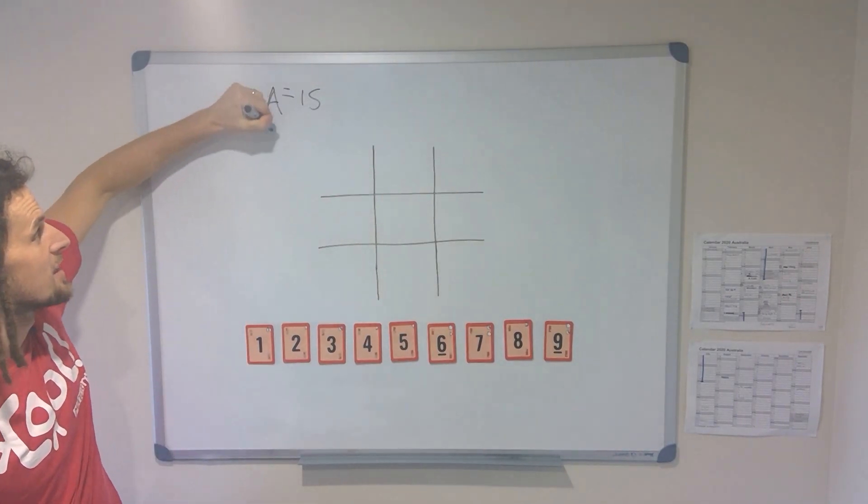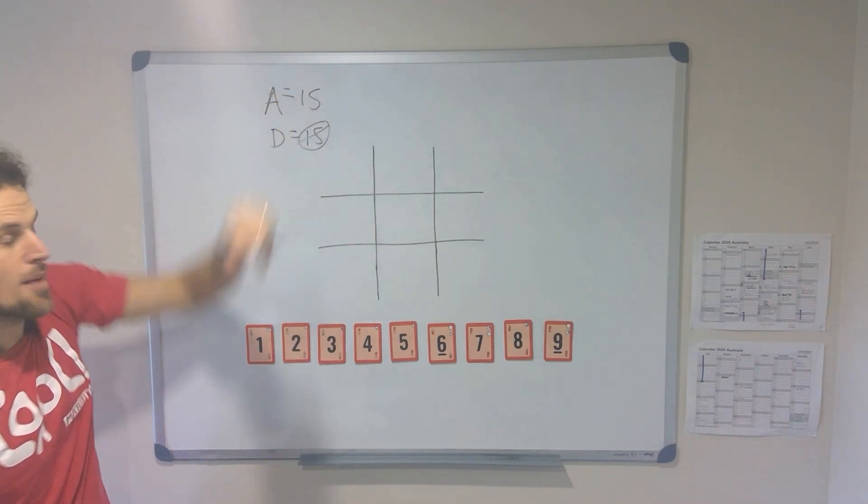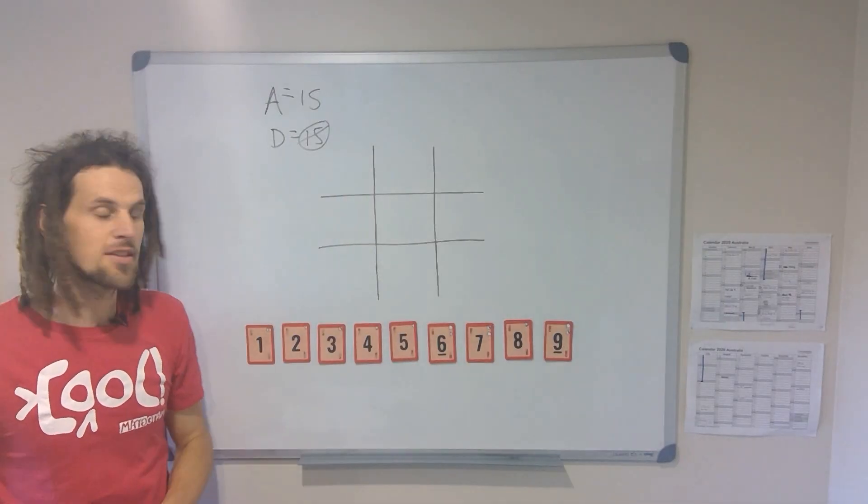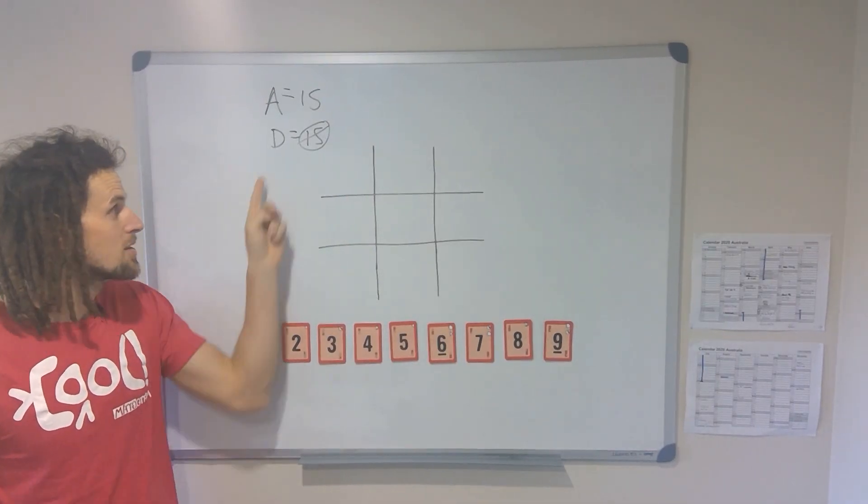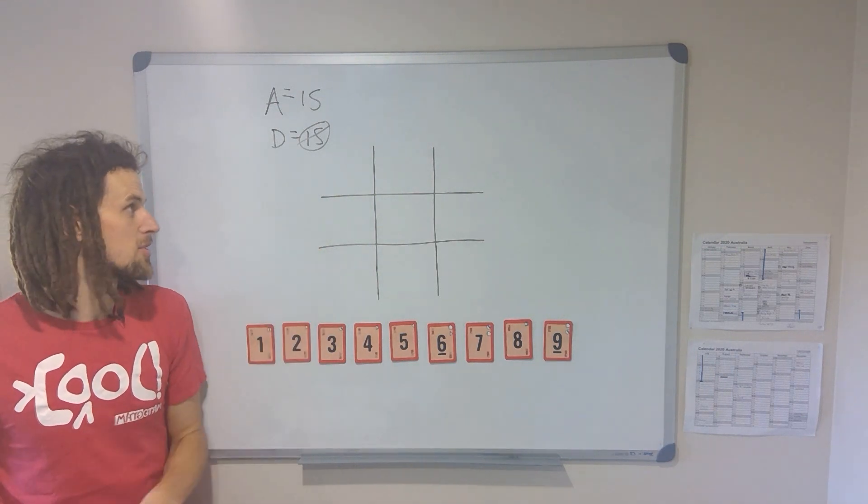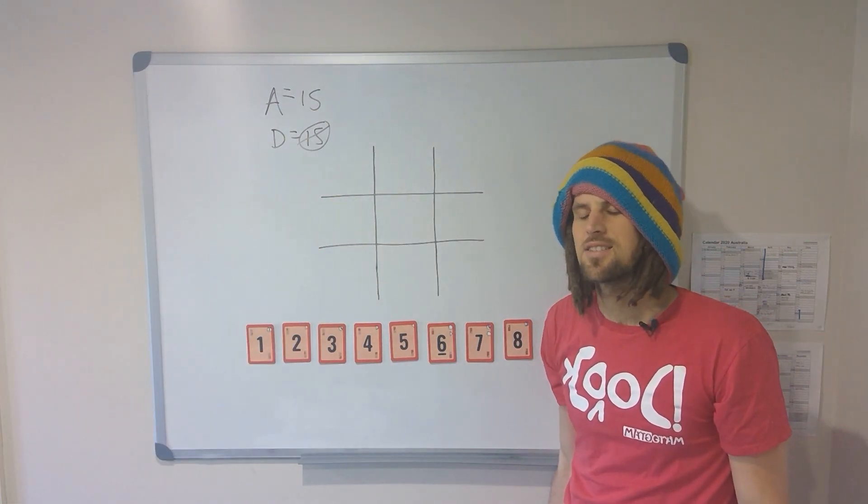The aim for the defender is to stop that from happening. So the attacker wins the game if any three numbers in a row add to 15, and the defender wins the game if all nine numbers end up in there but none of the rows, columns, or diagonals add to 15.